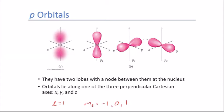Whether looking at N=2 or N=3 p orbitals, the shape is the same — N=3 just extends further out. There would still be a node in between the N=2 region and the N=3 region of the orbital.